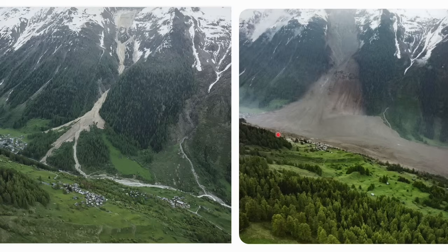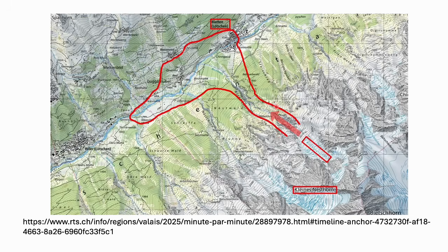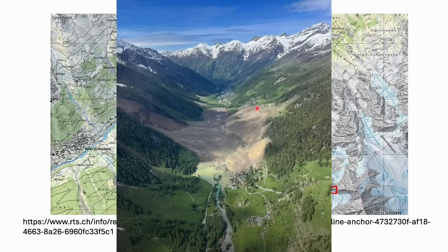On the map it looks like this: this was the triggering region, the Birch Glacier; this is the region that was covered by it; and there's the little village of Fiesch that just got away from it. You can see that most of Blatton was buried, and the river is dammed by the landslide so a lake is forming which has flooded the rest of Blatton.